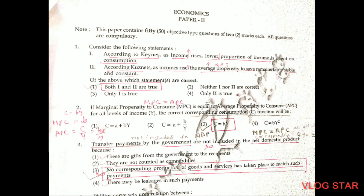Question number 3. Transfer payments by the government are not included in net domestic product because we only include things in national income which contribute to production. For example, a mother's service at home won't be included in national income because it doesn't contribute to production. Similarly, transfer payments are one-sided — like scholarships or pensions — because no corresponding production of goods and services has taken place to match such payments.